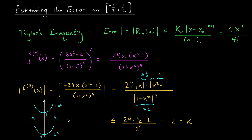Using k equals 12, the error bound becomes: the absolute value of the error is less than or equal to 12 times x to the 4 over 4 factorial. Since 4 factorial is 24, this simplifies to x to the 4 over 2. That gives a polynomial bound on the error. But since we want a constant upper bound for x between minus 1 half and 1 half, we note this expression is largest when x equals 1 half, giving an upper bound of (1 half) to the 4 divided by 2, which equals 1 over 32.